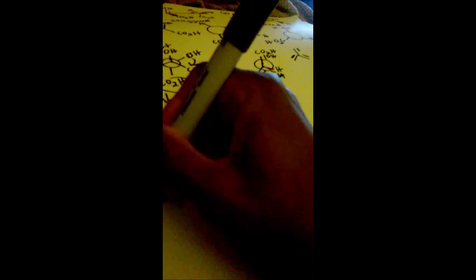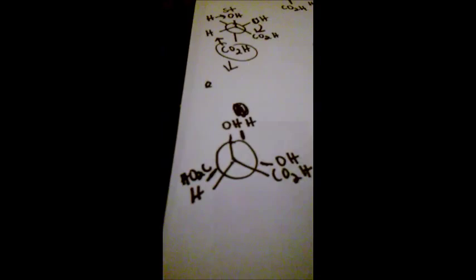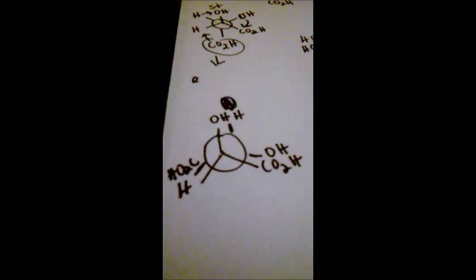That's what the next Newman projection will look like. The one you draw after this will be staggered again — you alternate between staggered and eclipsed until you have drawn the maximum number of Newman projections for this compound.